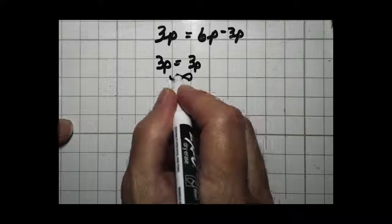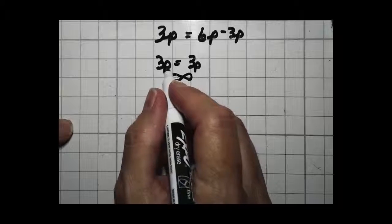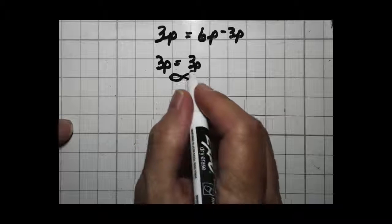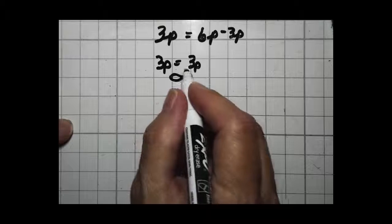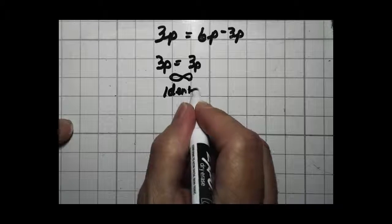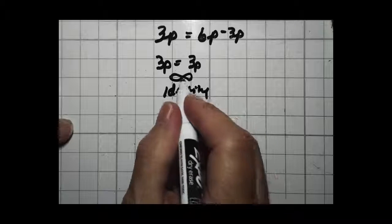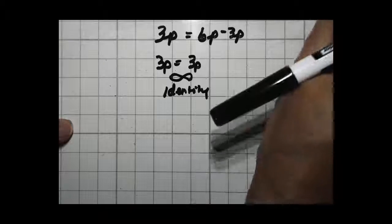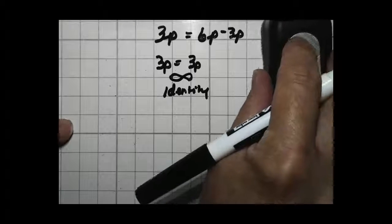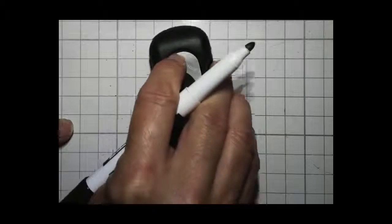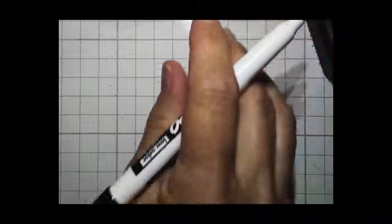That means you have an infinitely large number of solutions. Any number I could put in for p will make this true because you're multiplying both sides by 3. So it's exactly identical. Many times we call that the identity solution, which means you get 3 equals 3, 5 equals 5, 3p equals 3p. You get the same thing on both sides of the equation. That's totally different from no solution. That's so many solutions we can't count them all. That's called identity.